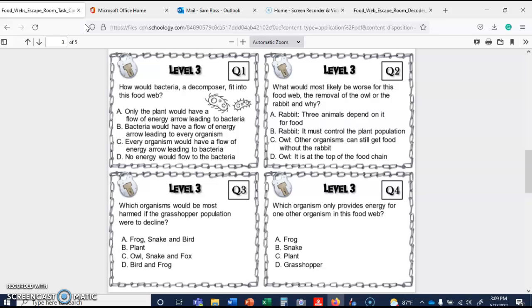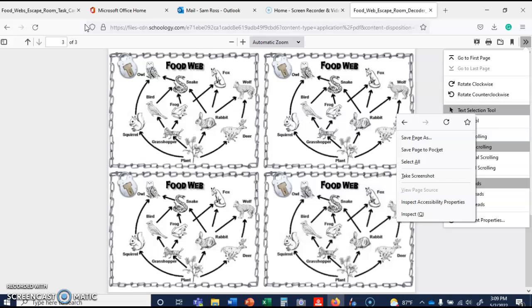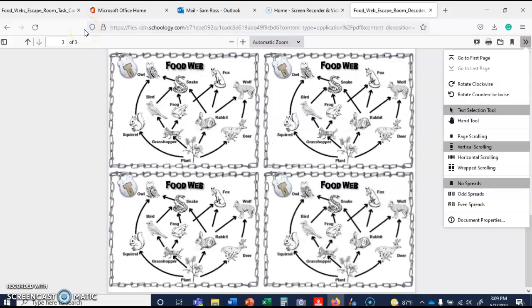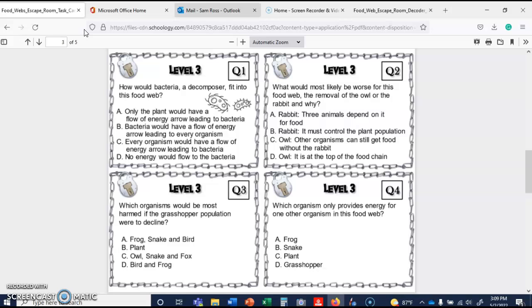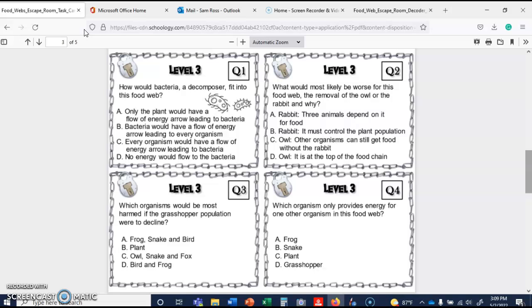And then organism, which organism only provides energy for one other organism in this food web? Just for one other organism. Squirrel, deer. What are my options? Frog, snake, plant, grasshopper. Frog provides for everything. Snake provides for owls. I think it's snake. Because the frog provides food for the snake. Let me go back. I keep forgetting. It is snake.